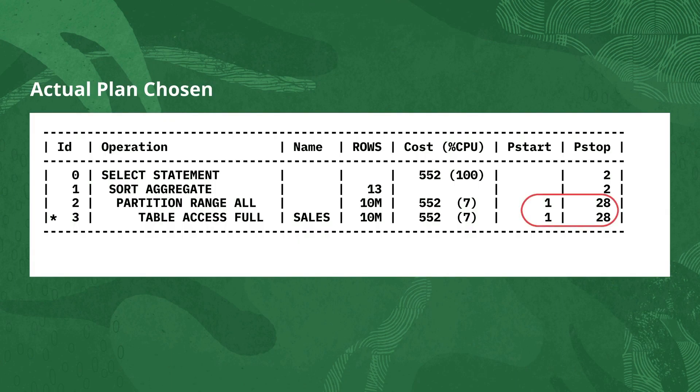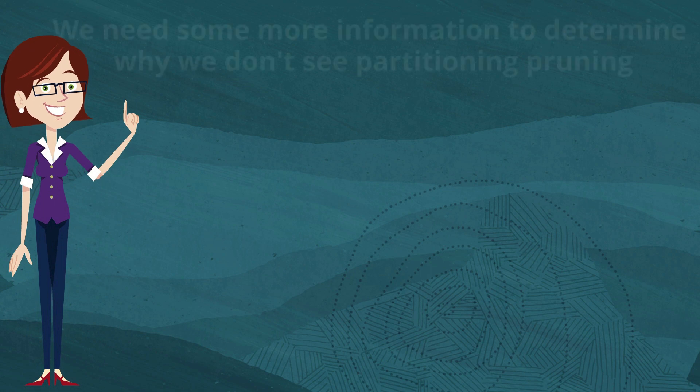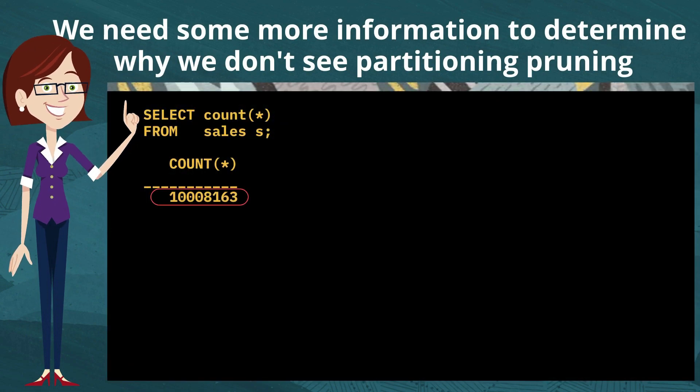Well, let's look at the actual plan. We see there that it's partitions 1 through 28 that are being accessed. And the partition range all would be an indicator that perhaps we're touching all of the partitions. But to find out that for sure, let's do a few internal queries. First, a quick count star, so we know that sales really is a big table.